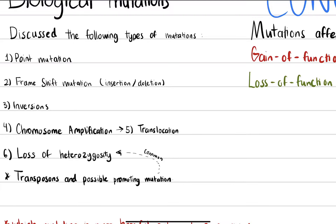We have inversions, when there is a flip of the entire genetic sequence. We have chromosome amplification, which can cause translocation — translocation is when we have a change of genetic information between different chromosomes. And we have loss of heterozygosity, which is caused by transposons.